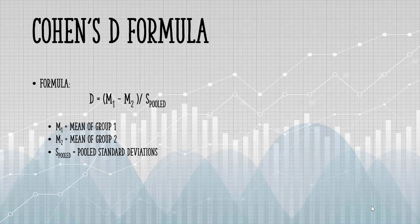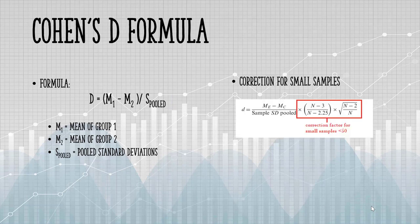Here's the Cohen's D formula. You subtract the two means for the two samples and divide it by the pooled standard deviation. I'll show you how to calculate that in just a moment, but a quick note.